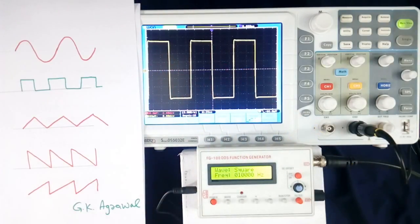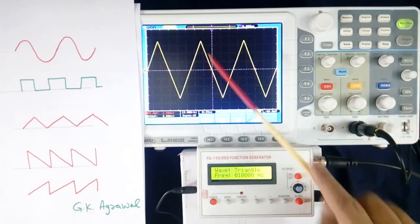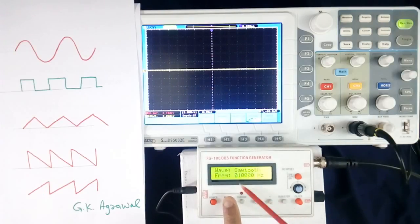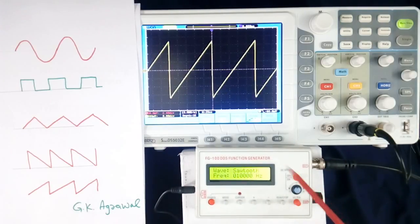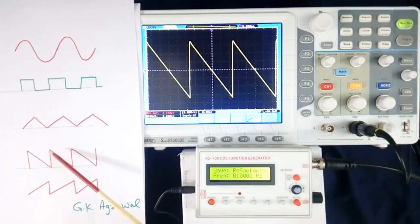For getting this, I have to switch off output, then using mode, triangle. Now this will come. Triangle has come. This method of changing will be different with different function generator. Now this one, sawtooth. This is sawtooth. Now next one, reverse sawtooth. This is this.